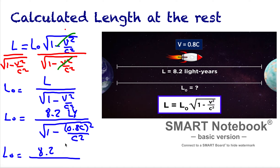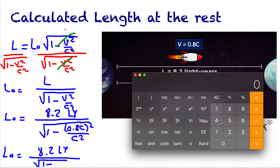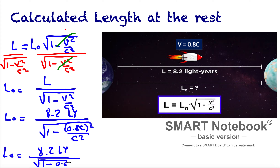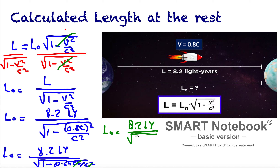We rewrite 8.2 light years on top. Inside the radical, we calculate 0.8 squared, which equals 0.64, giving us 0.64c squared divided by c squared. The c squared terms cancel, leaving 1 minus 0.64 inside the square root. So L0 = 8.2 light years divided by the square root of 1 minus 0.64.